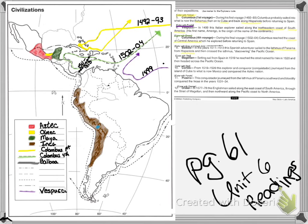The next explorer is Magellan. Ferdinand Magellan set sail from Spain in 1519. He reached the strait named for him in 1520 and then headed across the Pacific Ocean. That line goes right down the east coast of South America, through the Strait of Magellan, and out into the Pacific Ocean, where the crew feared they would not succeed because they could not see any land in sight for many days.